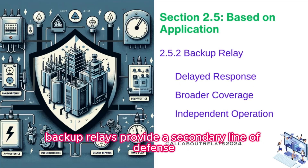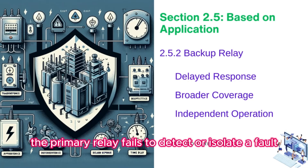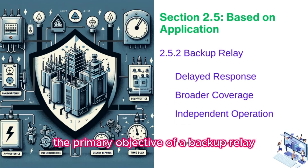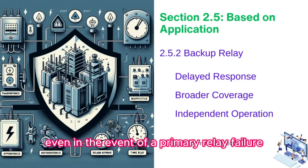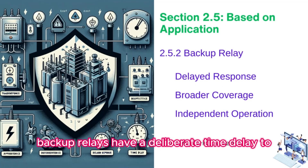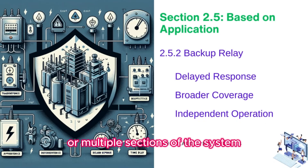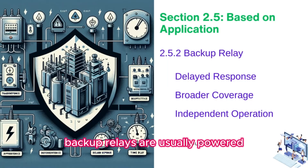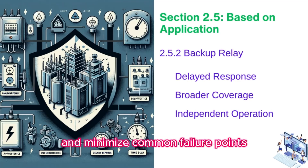Backup relays provide a secondary line of defense. They are designed to operate in case the primary relay fails to detect or isolate a fault. The primary objective of a backup relay is to ensure system protection is maintained even in the event of a primary relay failure. Unlike primary relays, backup relays have a deliberate time delay to allow the primary relay to operate first. They often cover a larger area or multiple sections of the system to provide overlapping protection, and are usually powered and controlled independently from the primary relay to minimize common failure points.